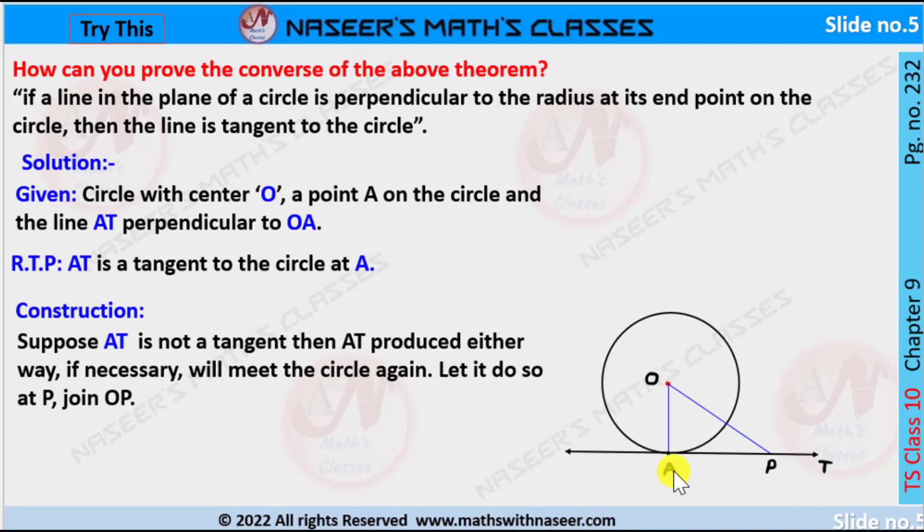So draw a circle with center O. If AT is a line whose endpoint is perpendicular to the radius OA. Given: a circle with center O, a point A on the circle, and the line AT is perpendicular to OA. Construction: Suppose AT is not a tangent. Then AT produced either way, if necessary, will meet the circle again. Let it do so at point P. Join OP.